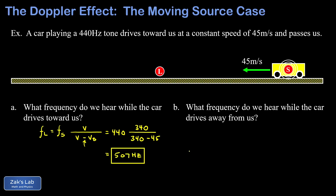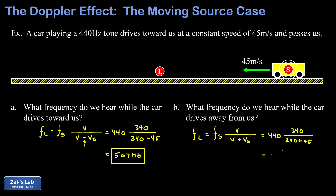Next, we find the frequency heard while the car is driving away. This time we choose the plus sign in the denominator, which guarantees the frequency we hear is lower than the emitted frequency. Plugging in 440Hz emitted, 340 meters per second for the speed of sound, and plus 45 meters per second for the speed of the source gives a frequency of 389Hz.